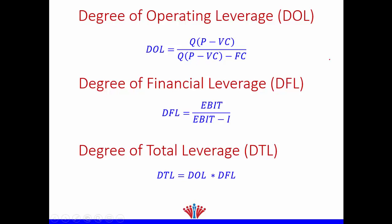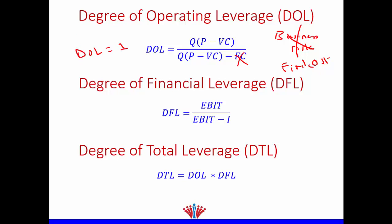Let's assume that we don't have any business risk. What do we mean by business risk? This is the use of fixed cost. Therefore, we don't have fixed cost, which means the numerator will be equal to the denominator. This means that the degree of operating leverage is equal to 1. So if the degree of operating leverage is equal to 1, it means that there is no business risk.